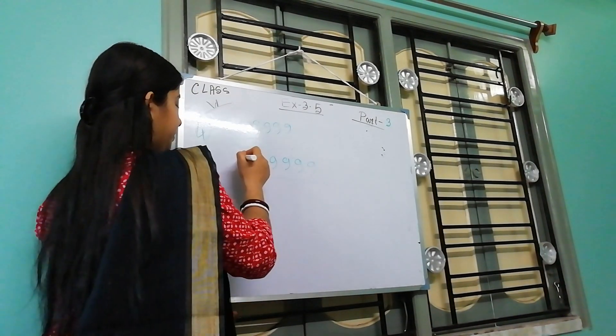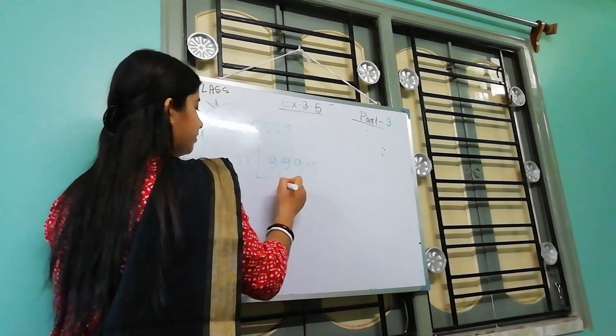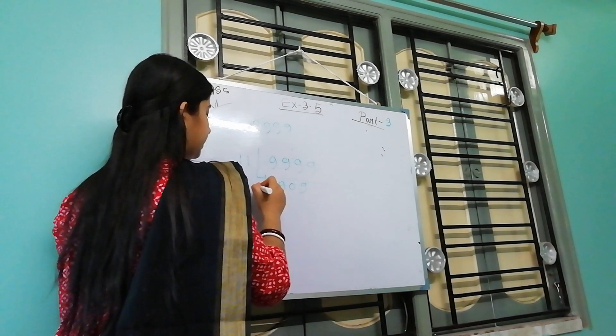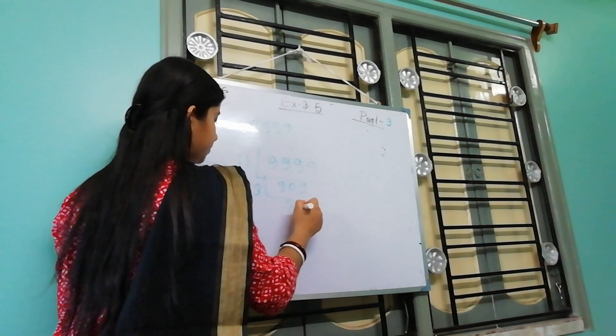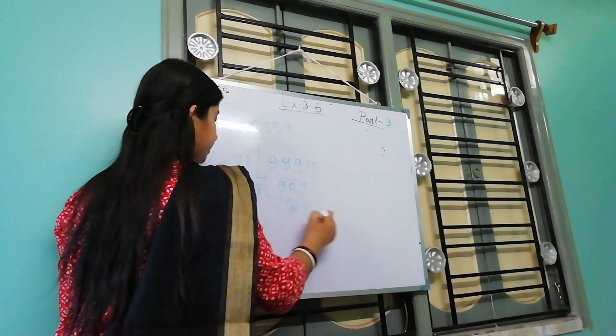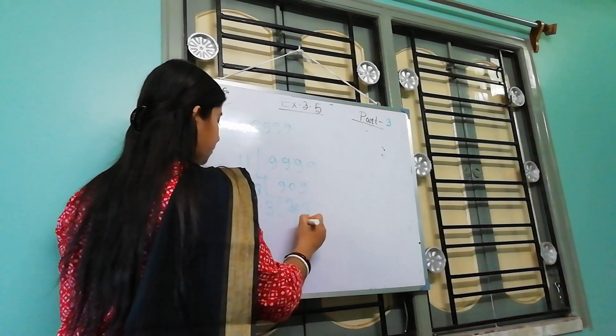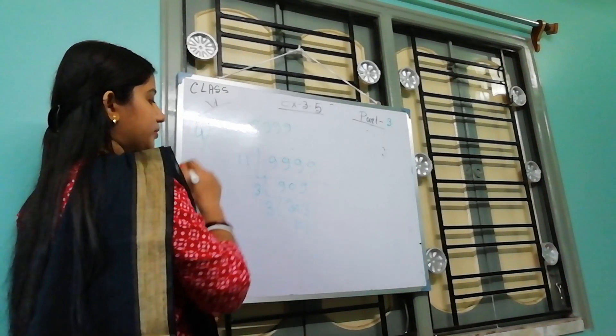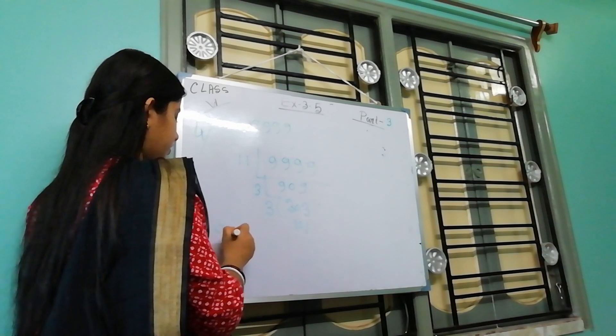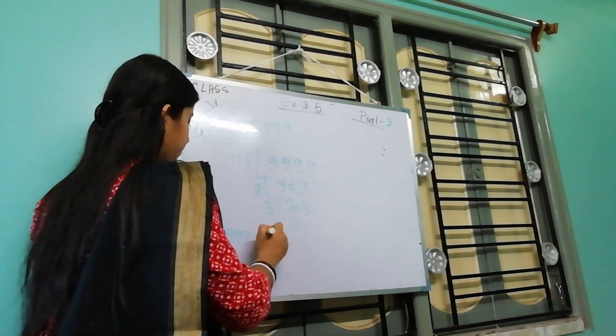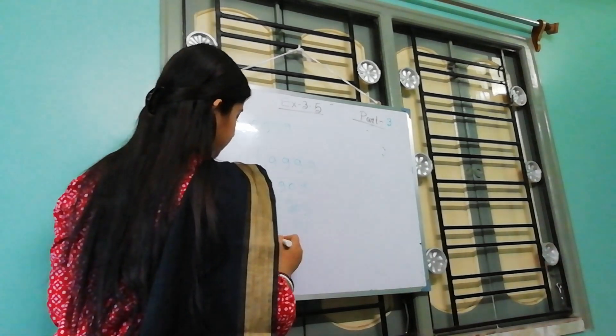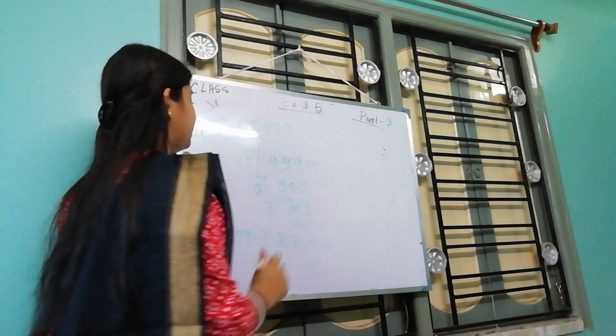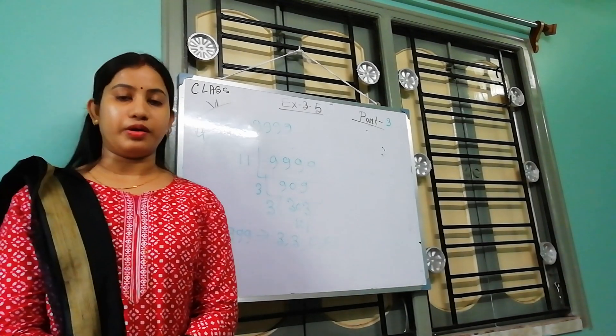Now we divide this by 11, then you get 11, 9, 11, 0. Again 11, 9, 11. Next 3, 3, 0, 3. So this is the factorization of this. So factorization of this are 3, 3, 11, and 101. This is number 4.